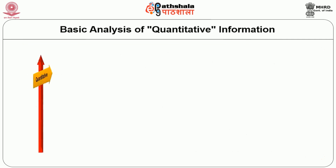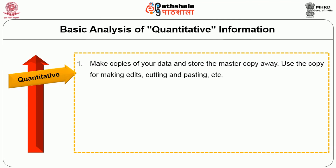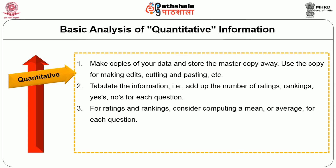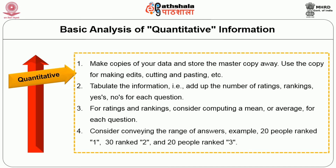Basic analysis of quantitative information: 1. Make copies of your data and store the master copy away; use the copy for making edits, cutting and pasting, etc. 2. Tabulate the information — that is, add up the number of ratings, rankings, yes's or no's for each question. 3. For rating and ranking, consider computing the mean or average for each question. For example, for question number 1, the average ranking was 2.4 — this is more meaningful than indicating how many respondents ranked 1, 2, 3 or 4. 4. Consider conveying the range of answers. Example: 20 people ranked 1, 30 ranked 2 and 20 people ranked 3.